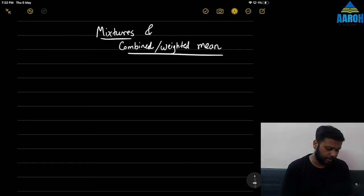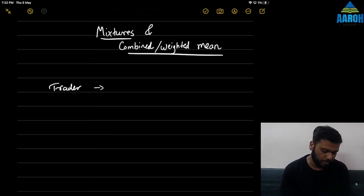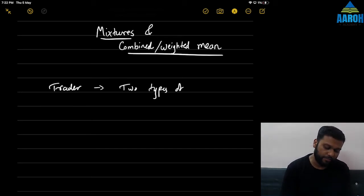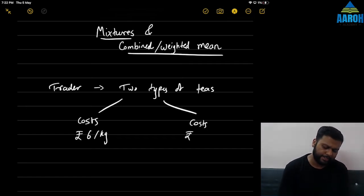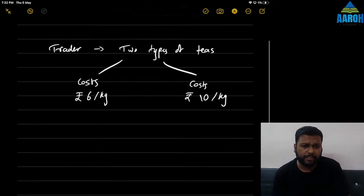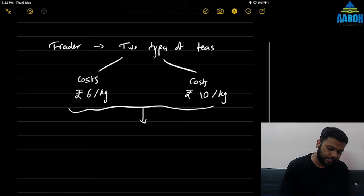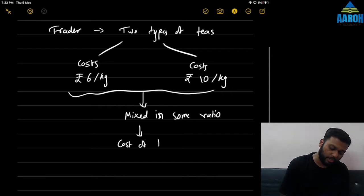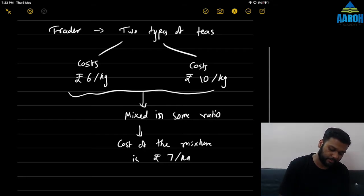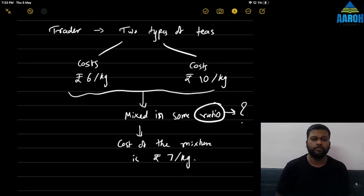Sometimes questions come like this: a trader sells two types of teas. T1 costs rupees 6 per kg and the other one costs rupees 10 per kg. These two teas are mixed in some ratio — we don't know the ratio — and the cost of the mixture is rupees 7 per kg. We have to find what is this ratio.